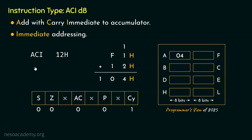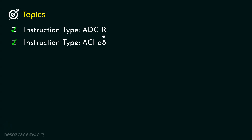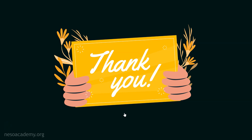So this is how ACI 12H works when the accumulator contains F1. Remember, this instruction falls under the 2-byte long category and ACI means add with carry immediate. In this session we covered instruction type ADCR, which falls under the 1-byte long instructions category, and ACI D8, which falls under the 2-byte long instructions category. From the next session onwards, we will learn about instructions related to the subtraction operation. Thank you all for watching.